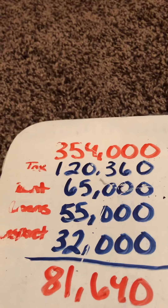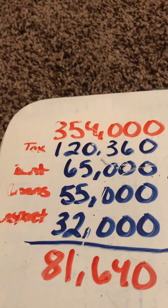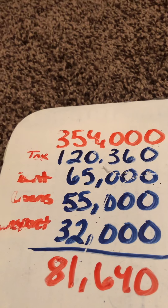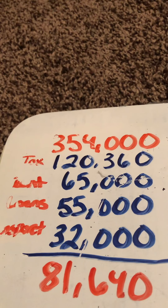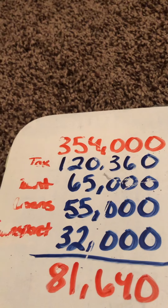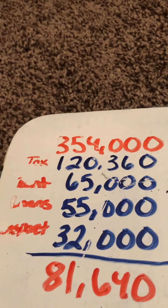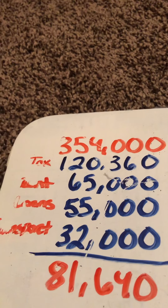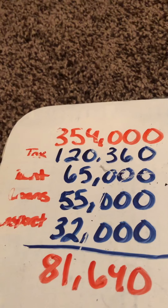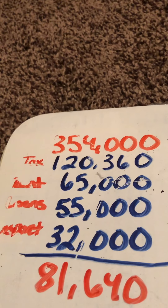Big jump from $354,000 down to $81,000. And that's after paying taxes, living expenses like your rent, your housing, any insurances, things like that — those essential expenses. You end up with about $81,640.